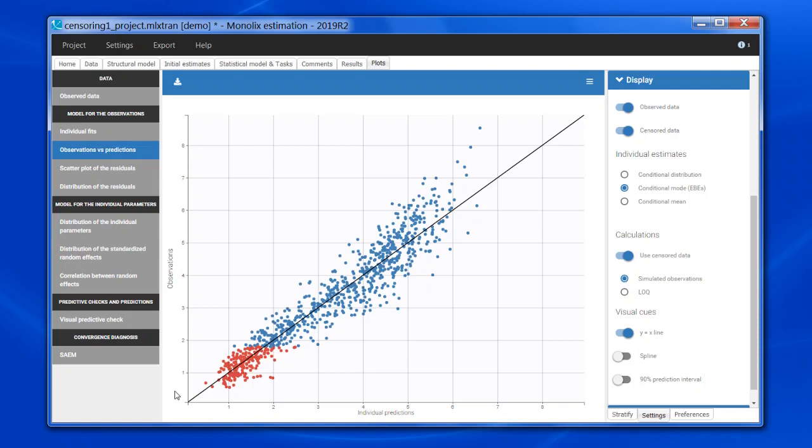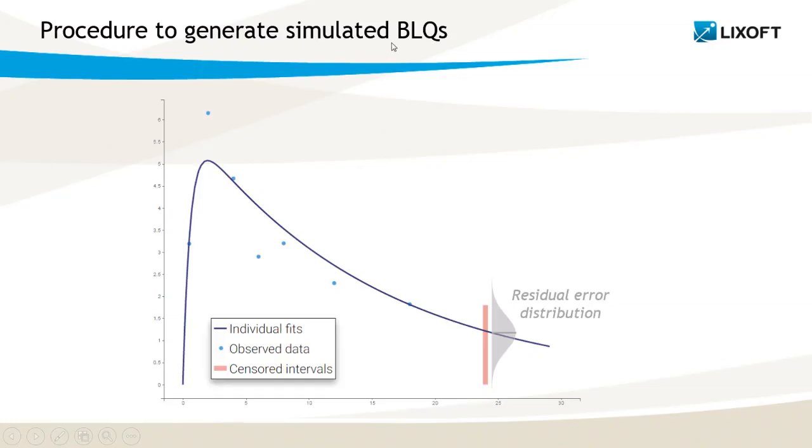Let me go back to the slides to explain how exactly the simulated BLQs are generated. To generate simulated BLQs, we take for each individual the prediction at the time of the BLQ, so that's a purple line here. And then we add residual error on top using the estimated residual error parameters. The grey bell-shaped area that you see here represents the normal distribution from which we sample the residual error.